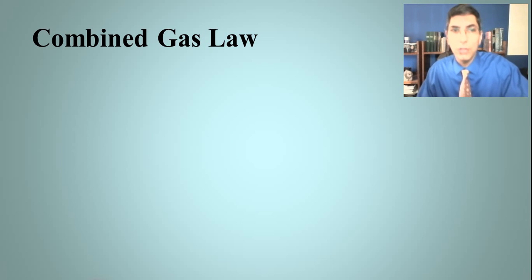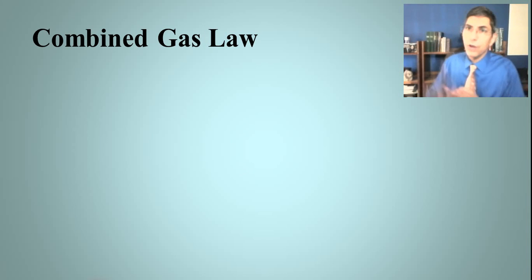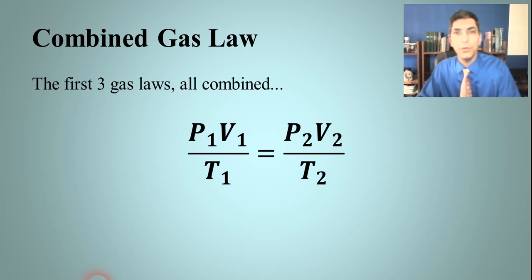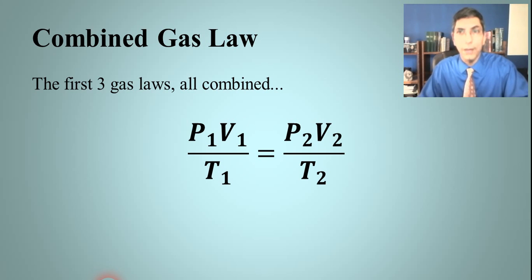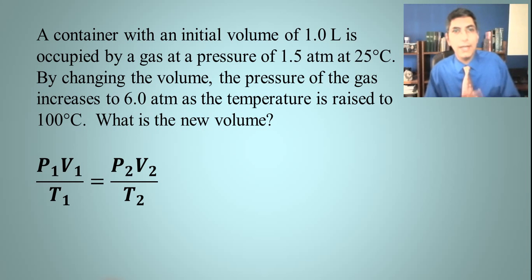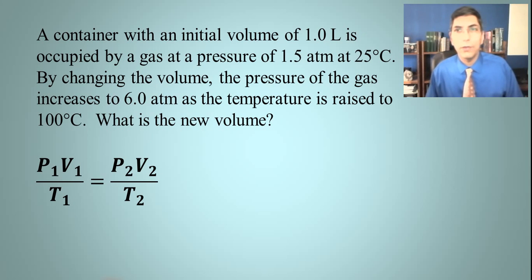There's one more gas law: the combined gas law. You get it by taking Boyle's law, Charles' law, and Gay-Lussac's law and combining them into one super gas law. The equation is p1v1 over t1 equals p2v2 over t2. When solving these problems, expect six variables at once. Let's try an example: a container with an initial volume of 1 liter has a gas at 1.5 atmospheres and 25°C.